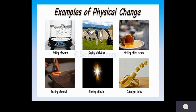More examples of physical changes: boiling of water is a physical change because we are converting water into vapors — again a change in physical properties. Other examples include drying of clothes, melting of ice cream, beating of a metal, glowing of a bulb, and cutting of fruits. In all these examples, there is a change in the physical properties of the substances with no formation of new substances.